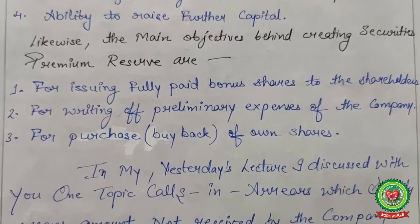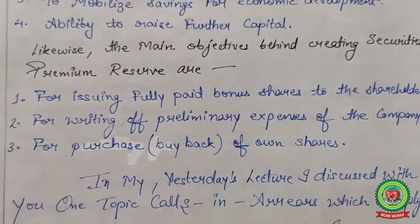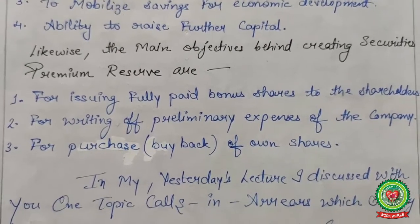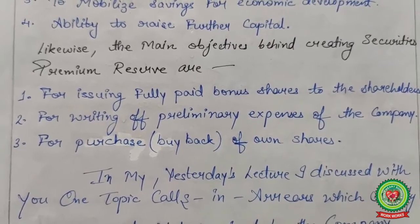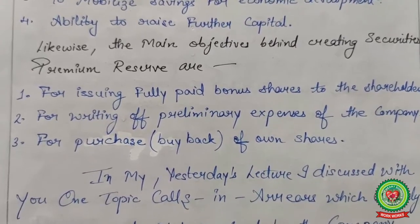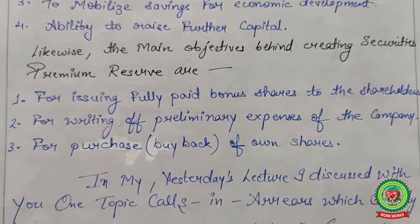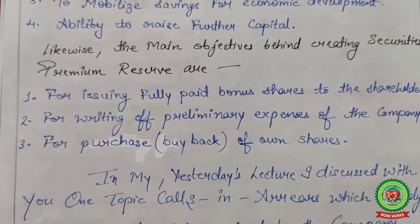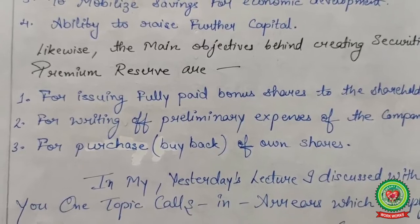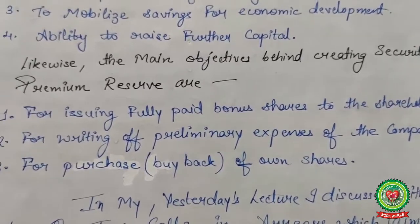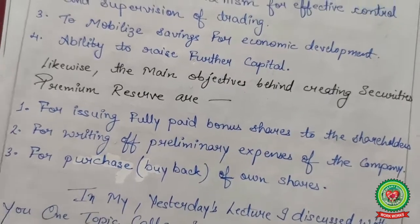The main objectives behind creating a security premium reserve: all the security premium amount collected goes under security premium reserve. First, for issuing fully paid bonus shares to shareholders. Second, for writing off the preliminary expenses of the company. Third, for the purchase or buyback of own shares. These are the three reasons — the objectives — for maintaining a security premium reserve.